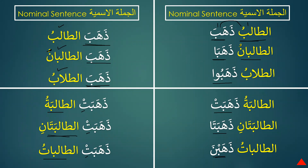In verbal sentence we only use dhahabat regardless of whether the doer is singular, dual, or plural. Alhamdulillah, now we have seen the comparison between jumlat al-ismiyya and jumlat al-fi'liyya and how to use the verb in these two sentence types. Half of the exercises are finished and inshallah when we meet again we will complete the rest.